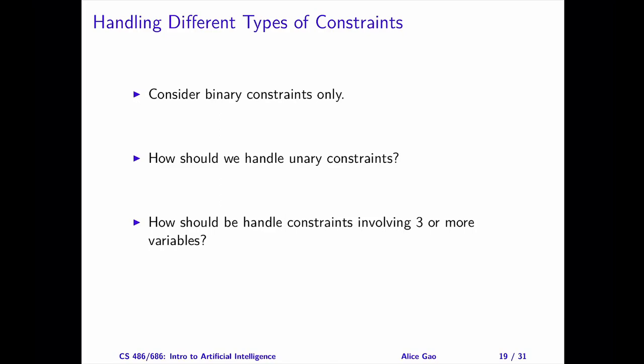In the next video, I will introduce an arc consistency algorithm which handles binary constraints only. In general, each constraint can be categorized based on the number of variables in the constraint. A unary constraint involves one variable. A binary constraint involves two variables. There are also constraints involving three or more variables.